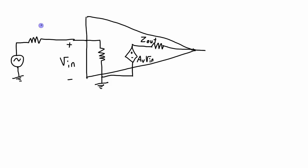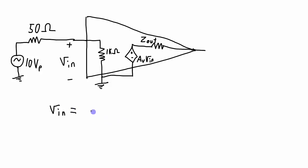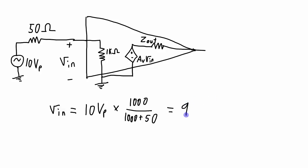Let's do a simple example where V-source is a 10-volt peak signal, the output impedance of the source is 50 ohms, and the input impedance of the amplifier is 1 kilohm. We want to figure out what the input voltage is going to be. This 10-volt signal is split between the 50-ohm and 1-kilohm resistors. V-in equals 10 volts times 1,000 divided by (1,000 plus 50), which gives a value of 9.52 volts peak. That's not a lot less than 10 volts, but it is significant enough to be easily measured.